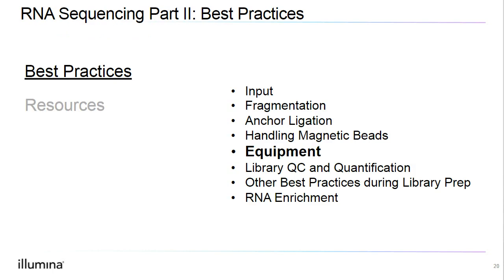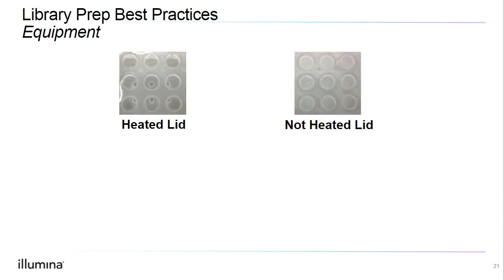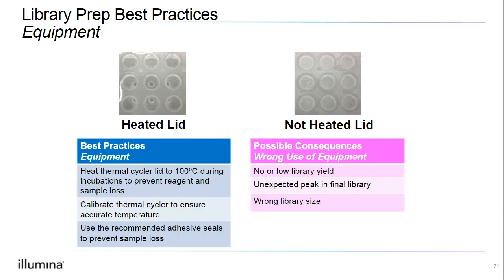Next, let's proceed with best practices related to equipment. In terms of PCR equipment, we want to highlight the importance of using a heated lid. The image on the left is a PCR performed with a heated lid; on the right is the same reaction without a heated lid, and we can see condensation which can result in sample loss or inefficient reaction. To prevent reagent and sample loss, we want to heat the thermal cycler lid to 100 degrees Celsius during incubation. We also recommend calibrating the thermal cycler to ensure step temperatures are accurate, and make sure to use the recommended adhesive seals to prevent sample loss from inadequate sealing at the edges.